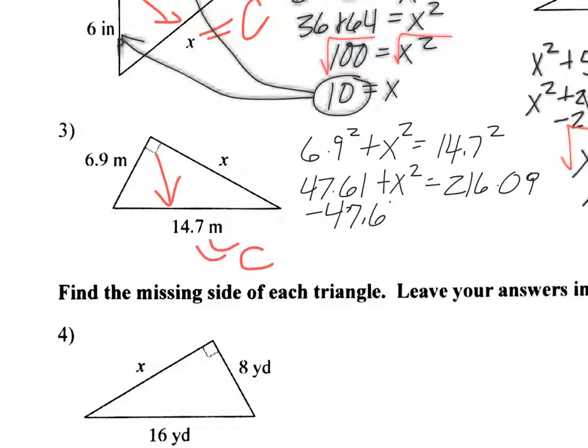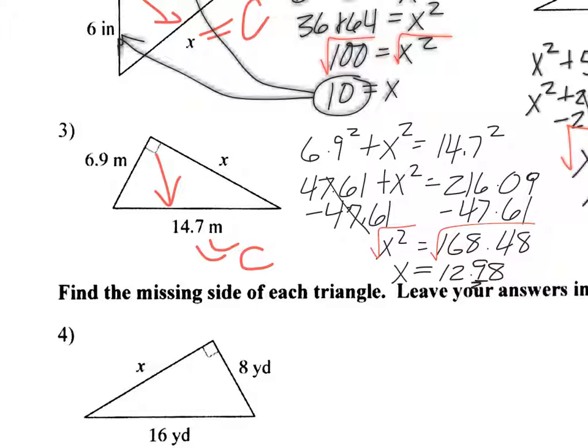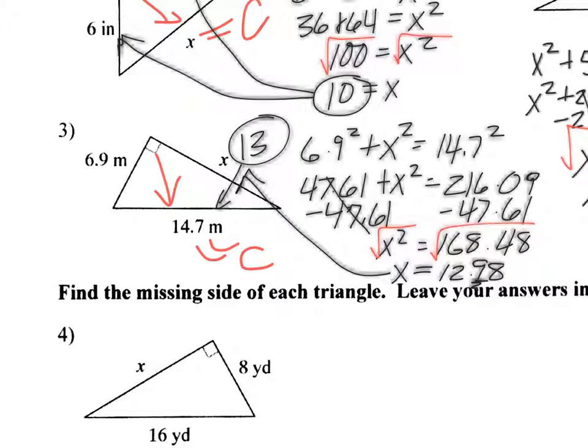So I'm going to take the square root, and that's going to give me x is equal to, said to the nearest tenth, so this is actually going to round to 13. You get 12.98, but to the nearest tenth, that's going to round to 13. Now again, that makes sense because it's less than the 14.7.